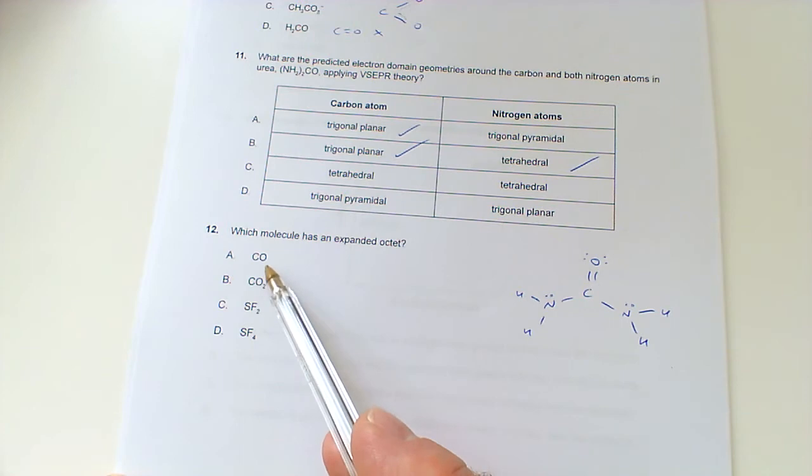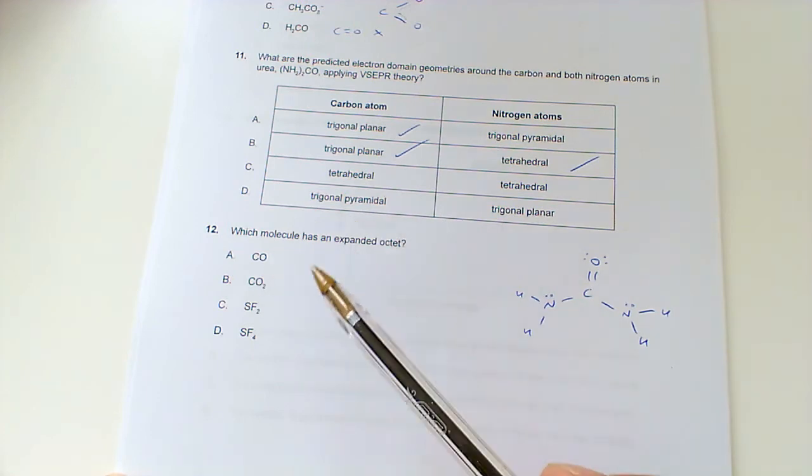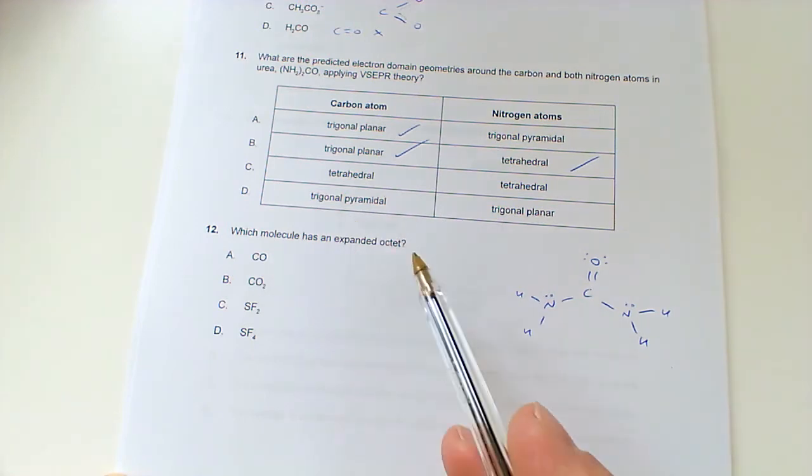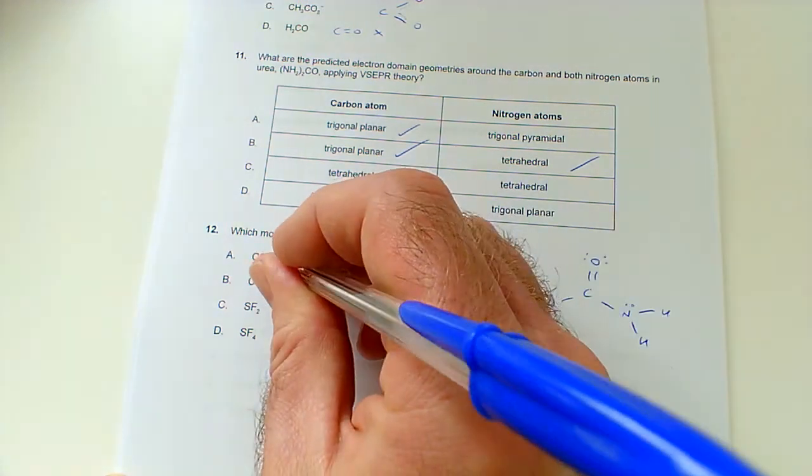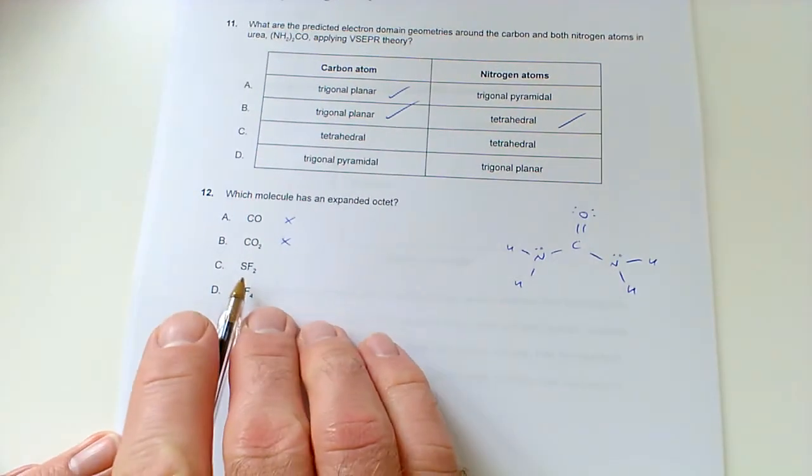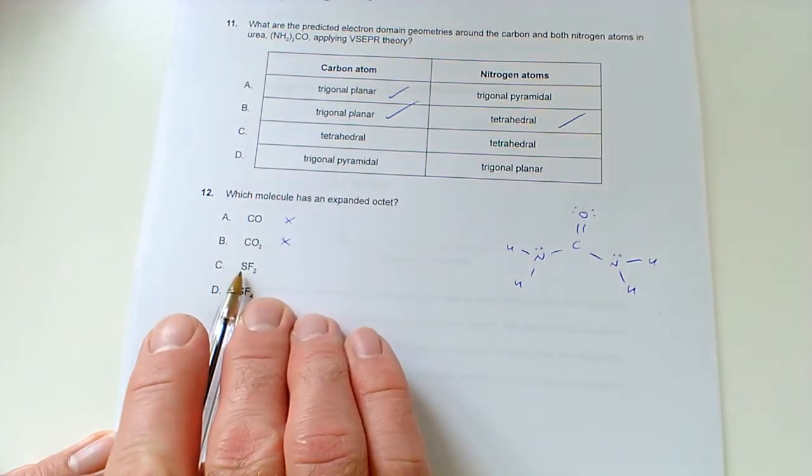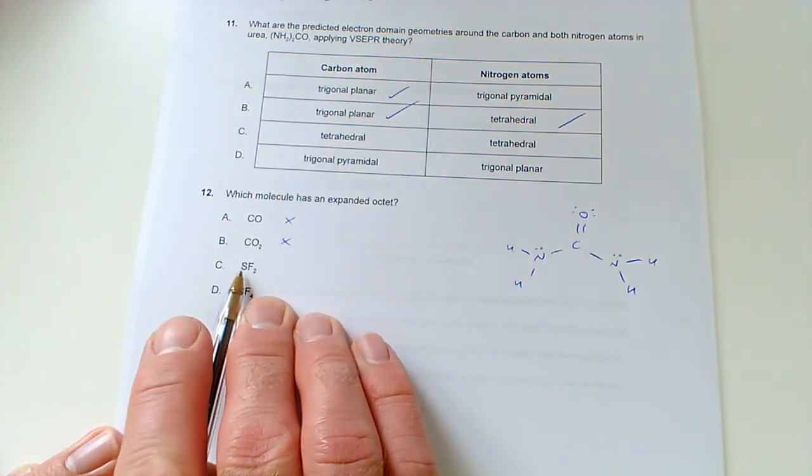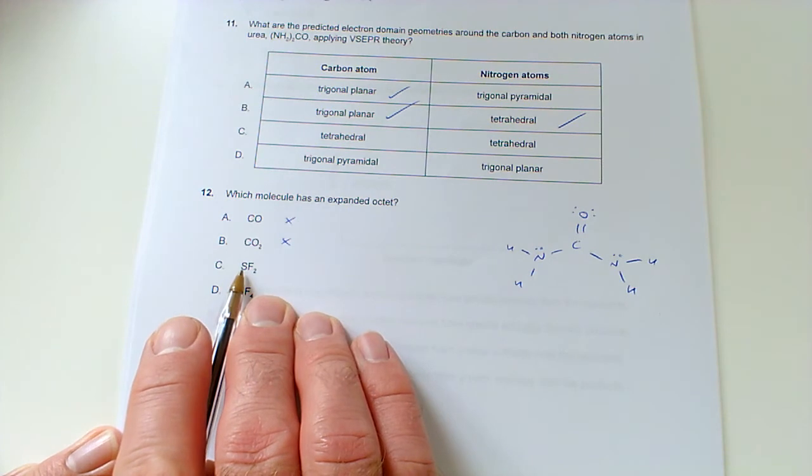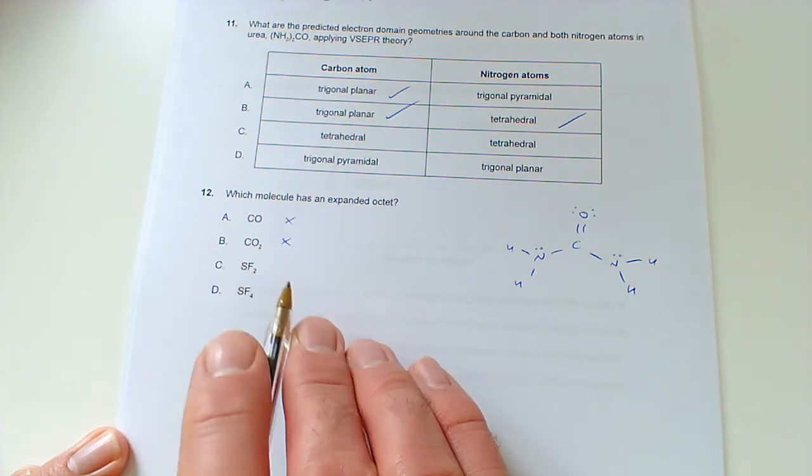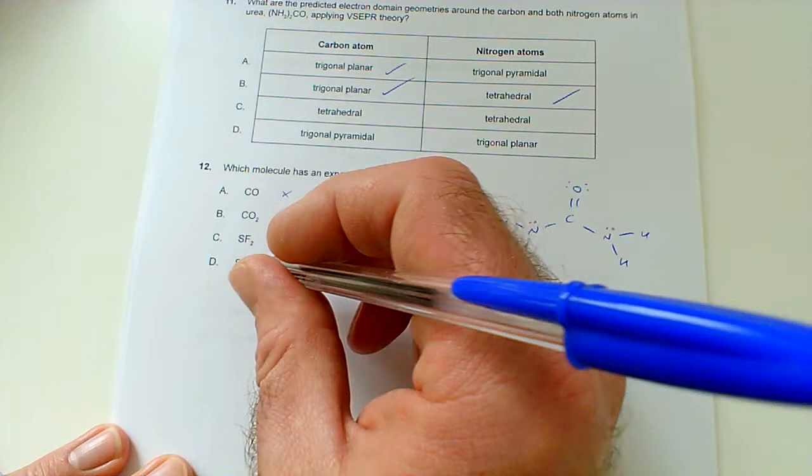Which molecule has an expanded octet? These are in period two, so they can't have expanded octets. Expanded octets only start from period three onwards, so it can't be these two. Looking at these, SF4 - if you think sulfur is group six, likes forming two bonds to get a full outer shell of eight electrons, then that looks pretty good.